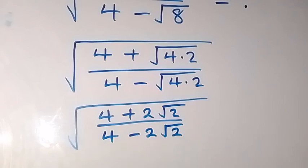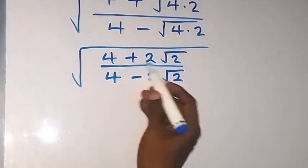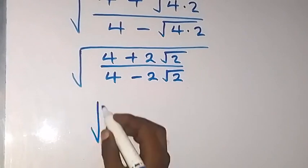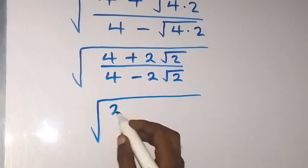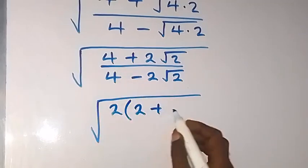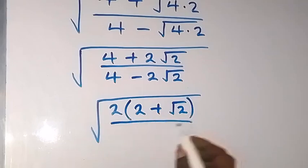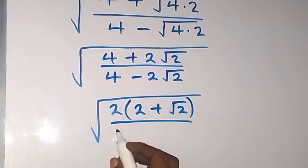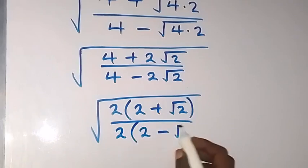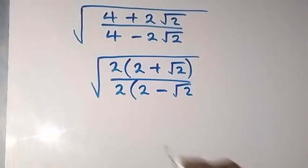In the next step, let's factor 2 out. This gives us square root of 2 times bracket (2 plus root 2), divided by 2 times bracket (2 minus root 2).